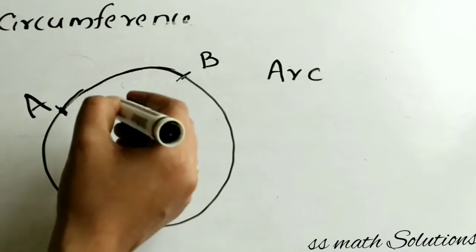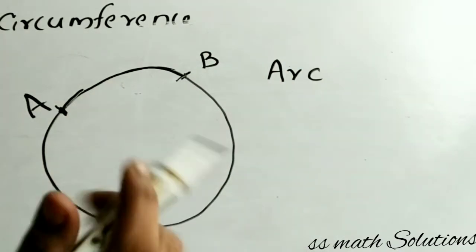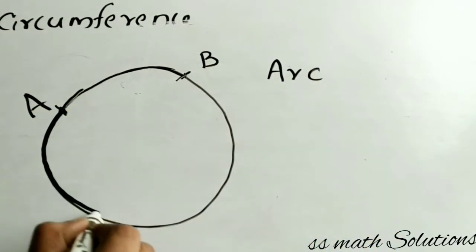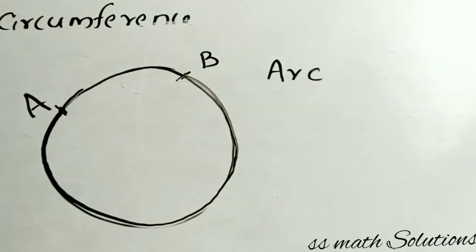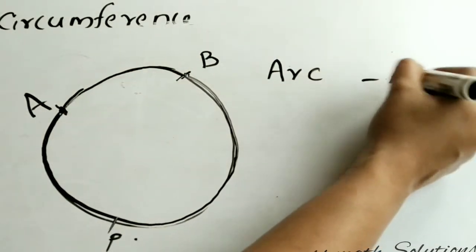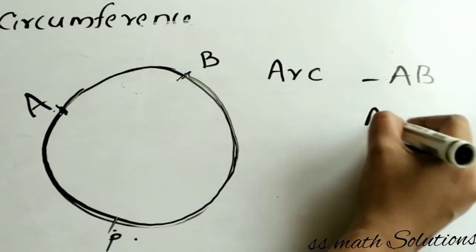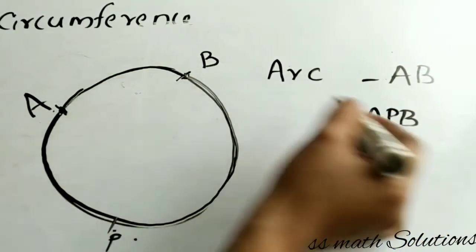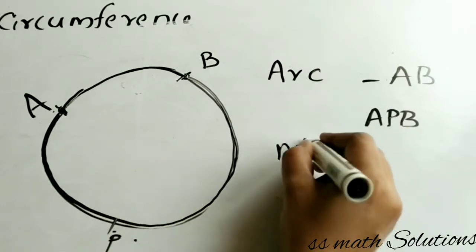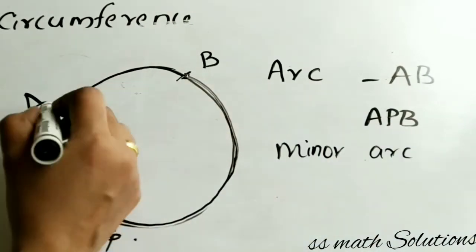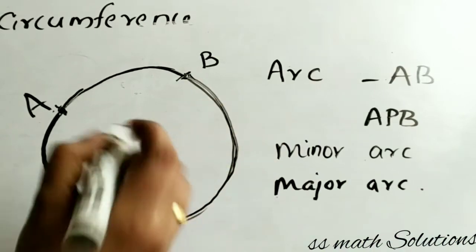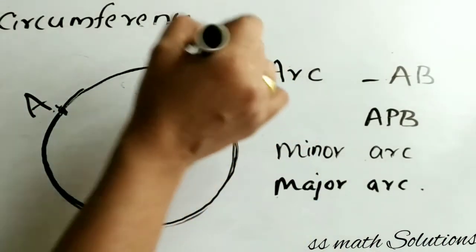The piece of a circle between two points is called the arc of the circle. This is one arc. We can draw so many arcs. I am making a point P here for understanding. A to B is one arc, and A-P-B is also another arc. A-B is the small arc — that is called the minor arc. A-P-B is the big arc — that is called the major arc. The small arc is called minor arc and the big one is called major arc.